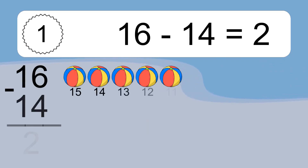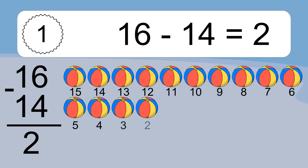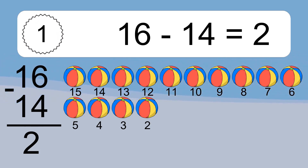16 minus 14 equals 2. Let's count it. 15, 14, 13, 12, 11, 10, 9, 8, 7, 6, 5, 4, 3, 2.